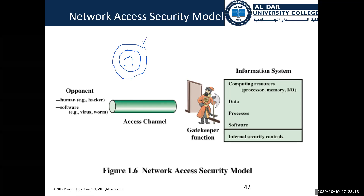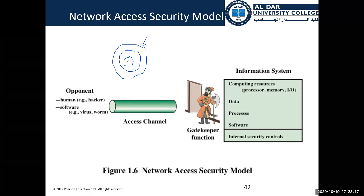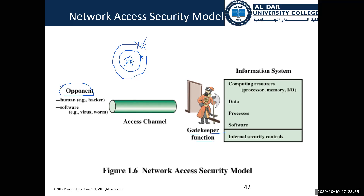If the attacker wants to get into our system to capture the data, he cannot reach it because we have many layers. If he succeeds in passing through one layer, he will not succeed in passing the next. This is defense in depth. The gatekeeper function involves a hardware or software component — like a firewall — standing in front of our data protecting it from opponents, who may be hackers or malware like viruses.